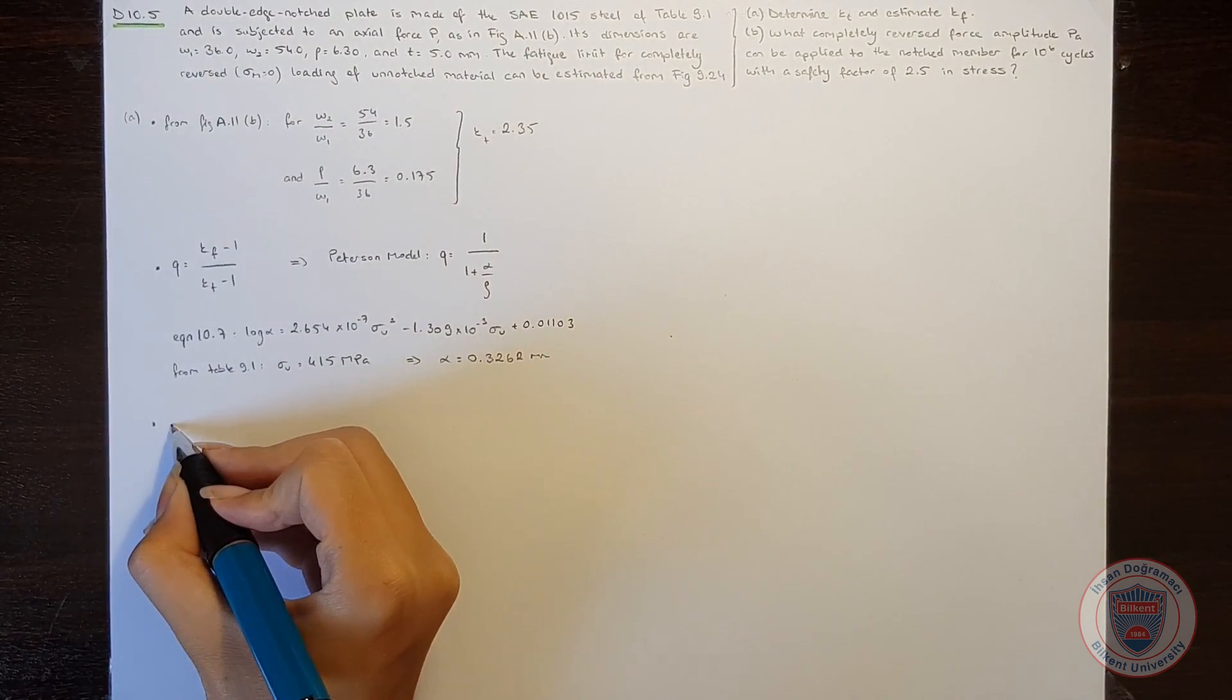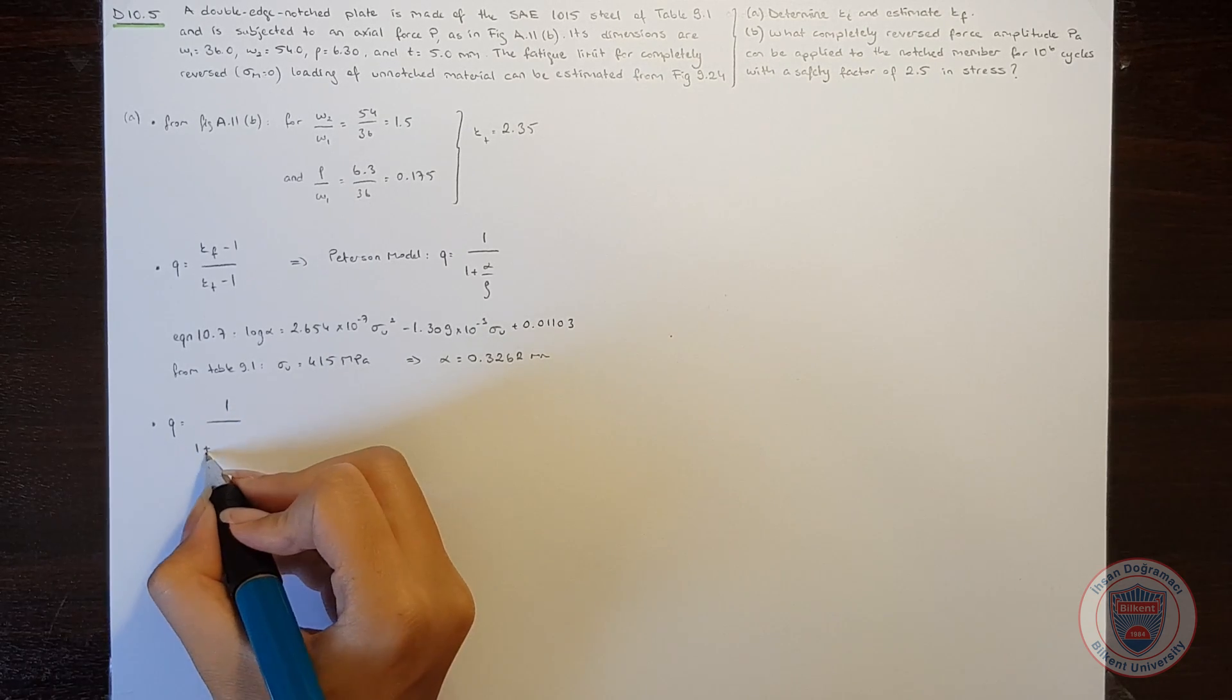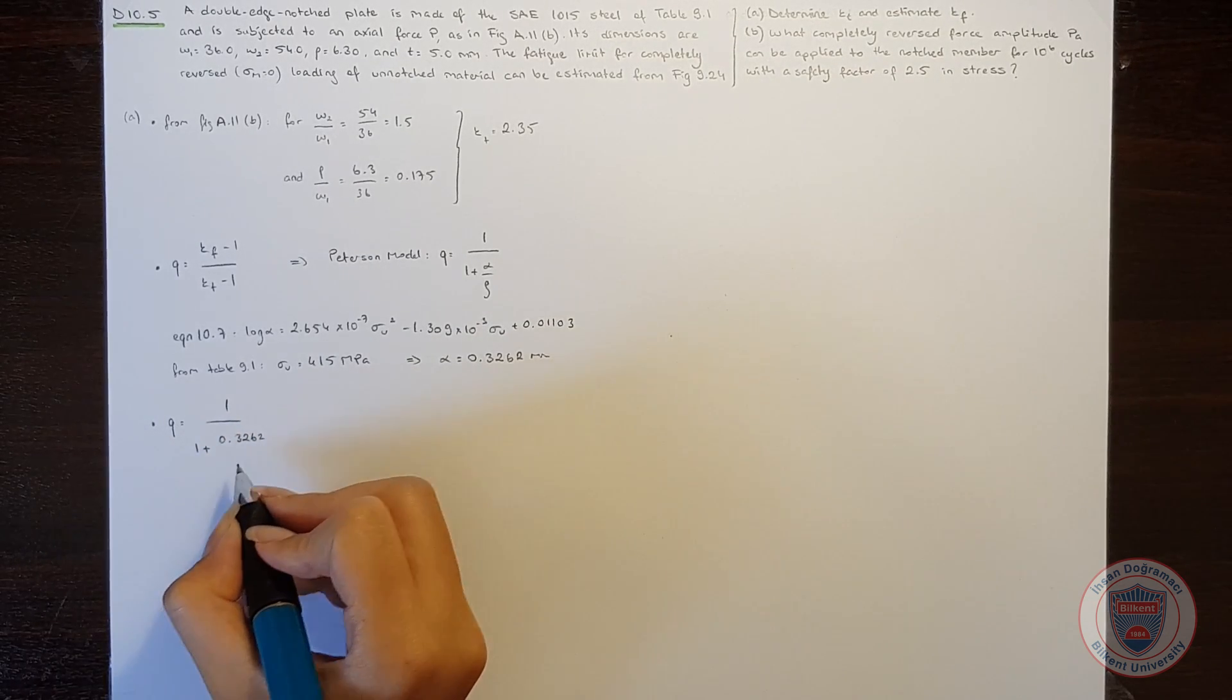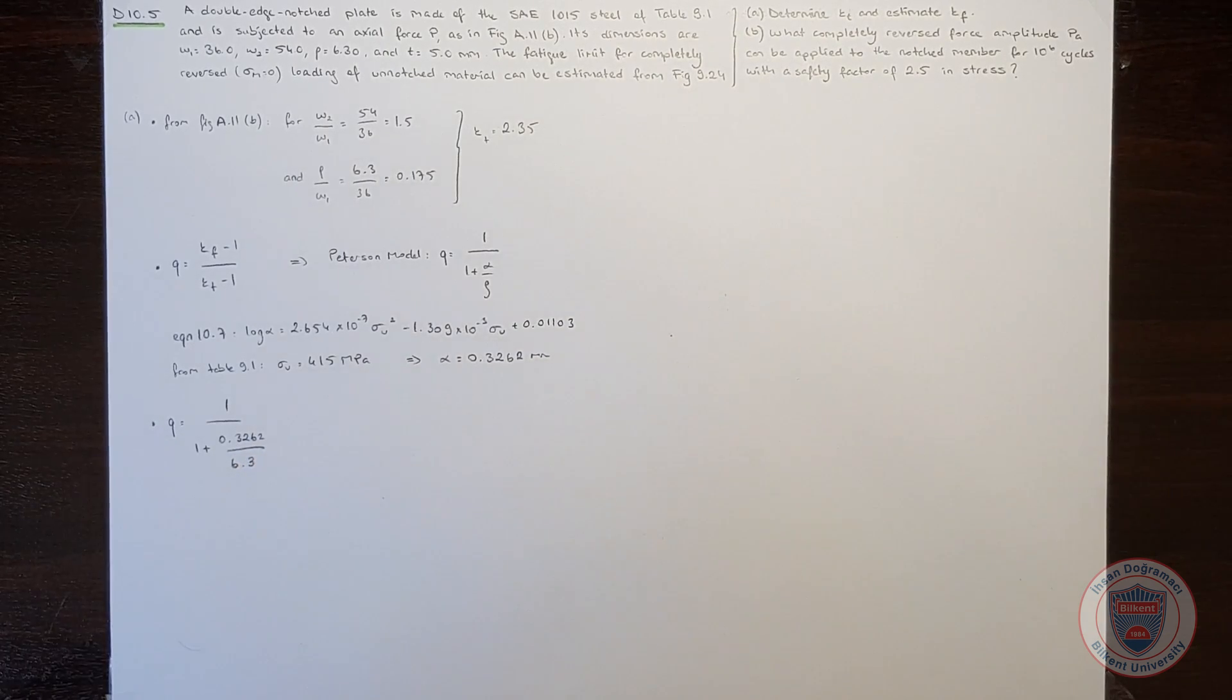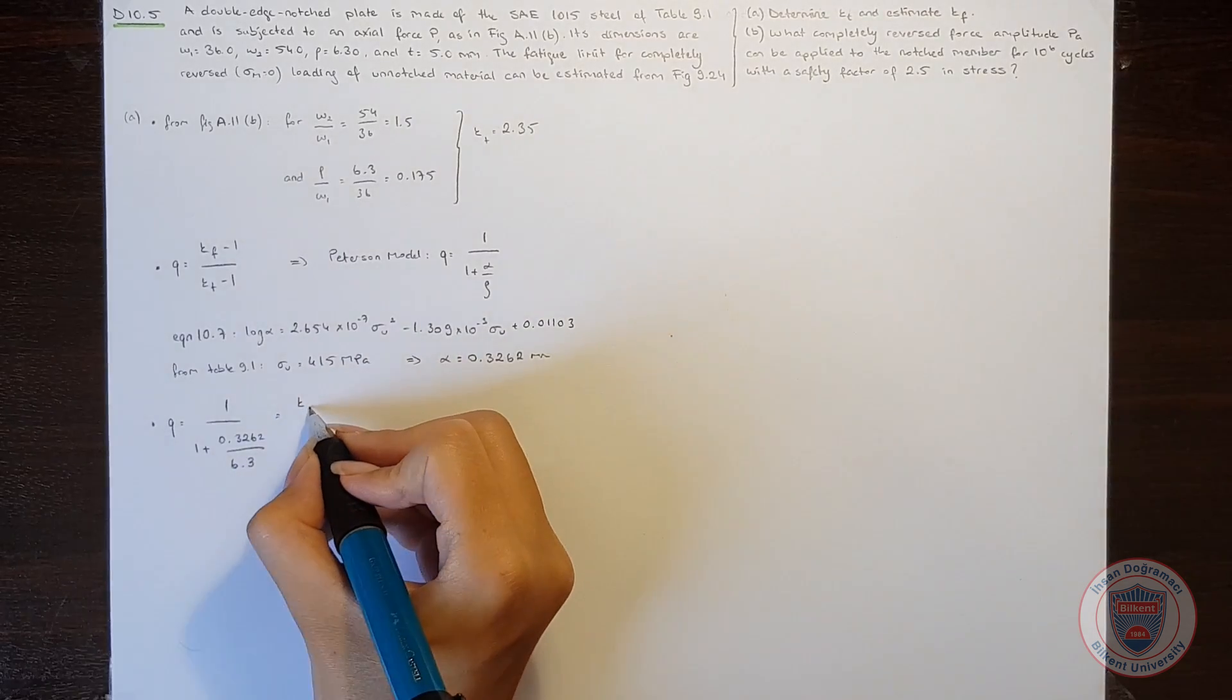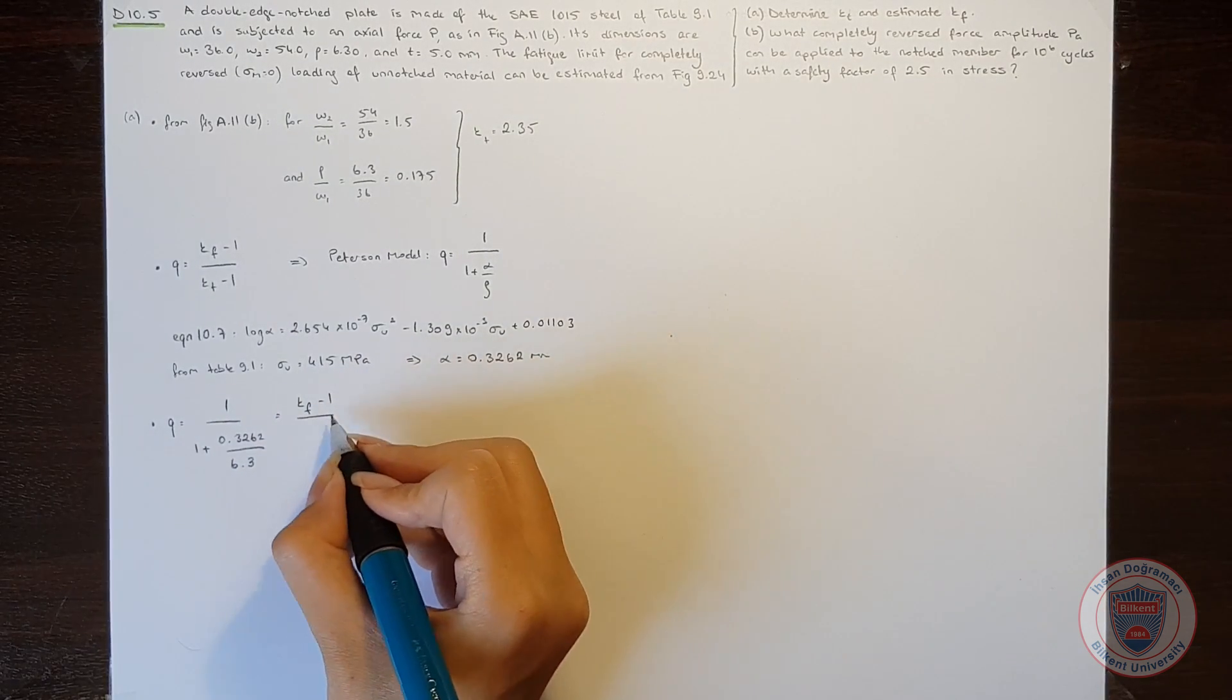So that the notch sensitivity becomes 1 over 1 plus alpha over the notch radius, which is 6.3, and it will be equal to 0.95.